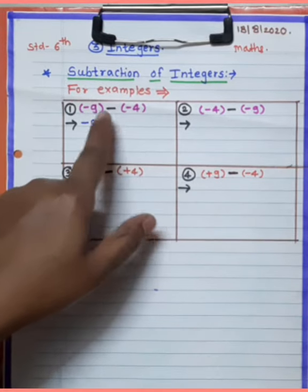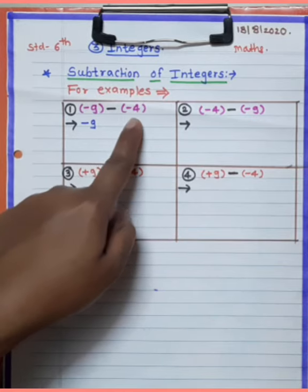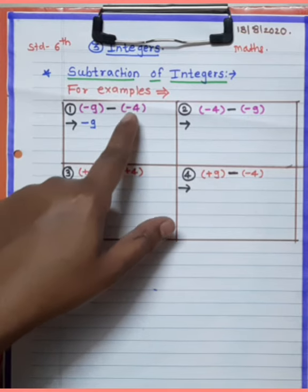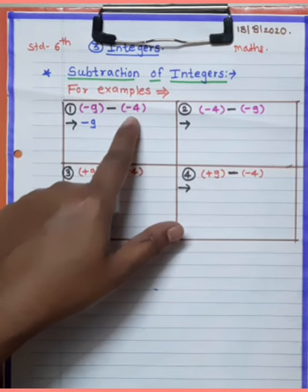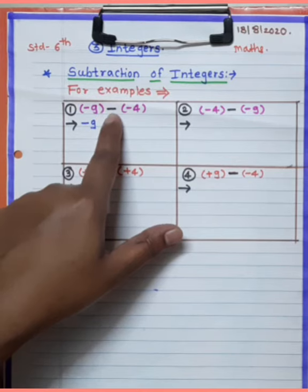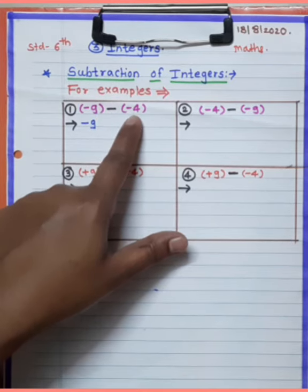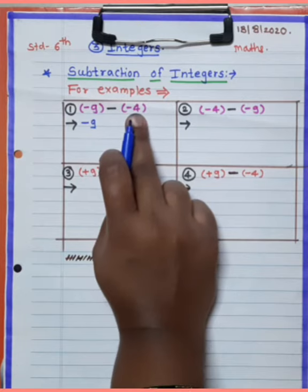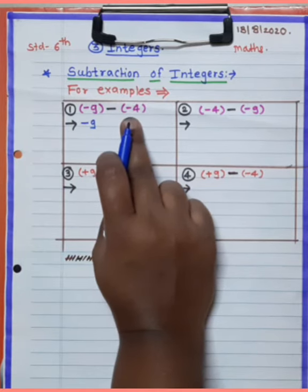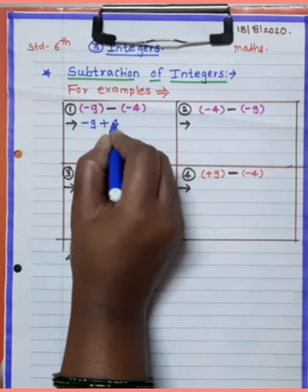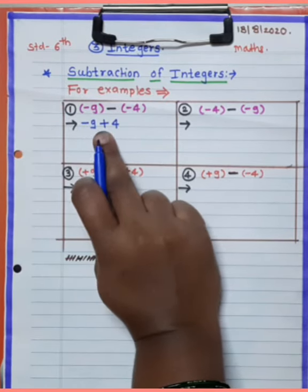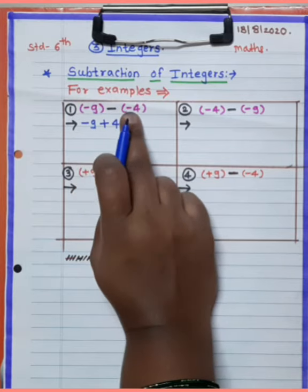When you have a bracket with a minus sign, the bracket's minus sign stays as it is, but the number's sign changes. So minus bracket minus 4 — the minus 4 changes to plus 4. Therefore: minus 9 minus minus 4 becomes minus 9 plus 4. The rule is: minus minus equals plus.